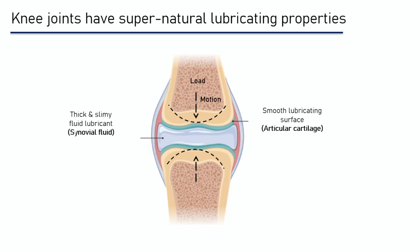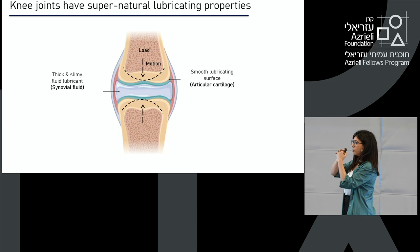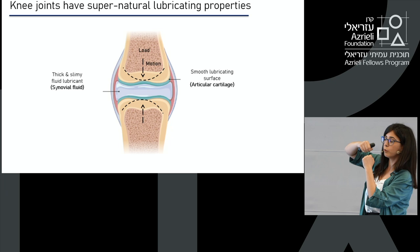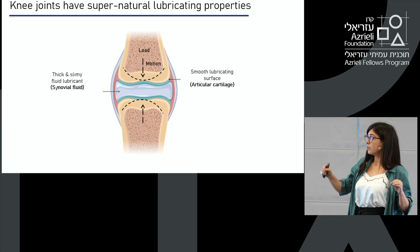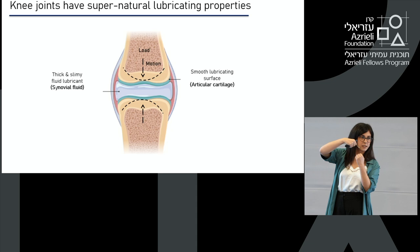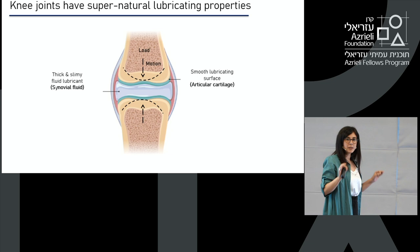In order to understand what osteoarthritis is, we have to take a closer look at what amazing structures our joints are. In my research, I focus on knee joints because they are the most affected by osteoarthritis, and they have extremely good lubrication. We have two bones facing one another, and on the surface, on the top of each bone, you have a very smooth membrane that helps the bones to move with low friction and extremely good lubrication. That membrane is called articular cartilage, and in combination with the fluid that is between those bones, everything is amazing. No man-made material can achieve that property of good lubrication.